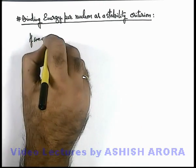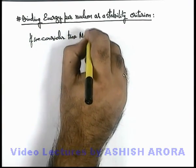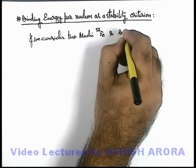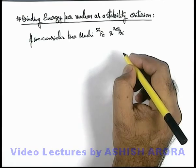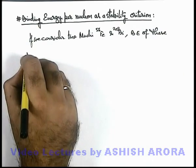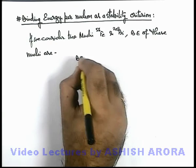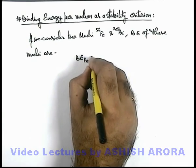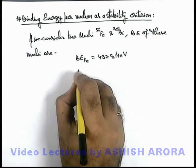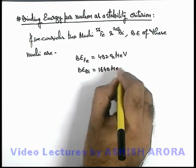If we consider 2 nuclei — Iron-56 and Bismuth-209 — then the binding energies of these nuclei are: the binding energy of the iron nucleus is 492.8 MeV, and the binding energy of bismuth is 1640 MeV.